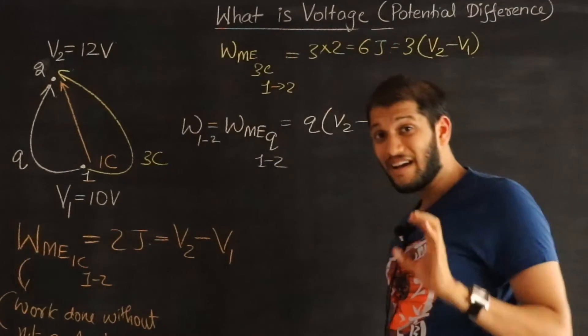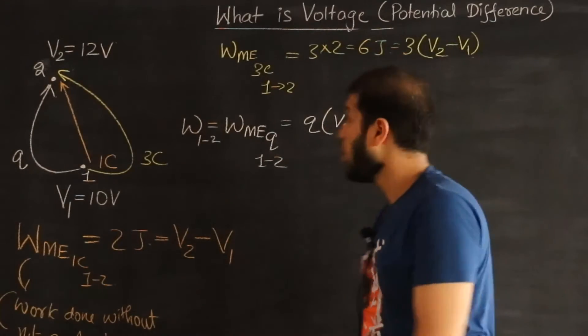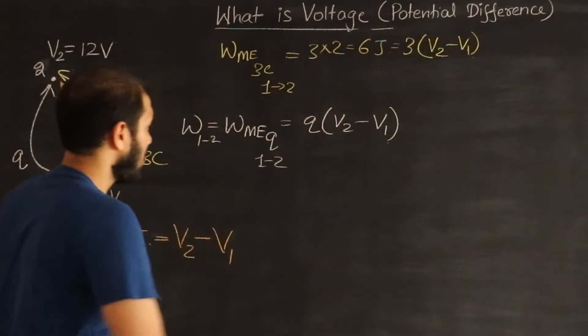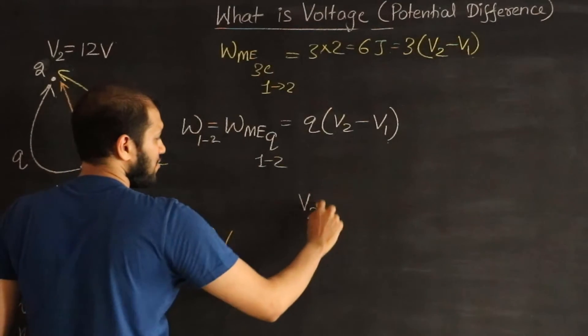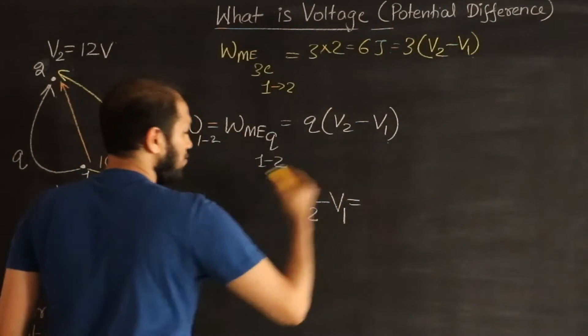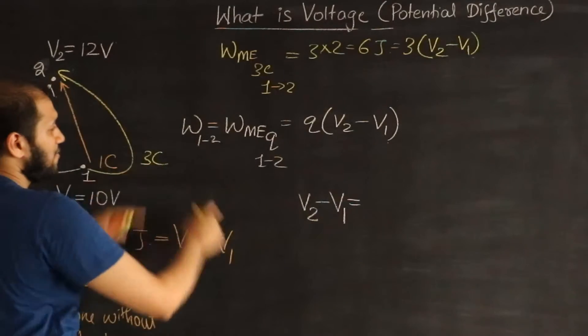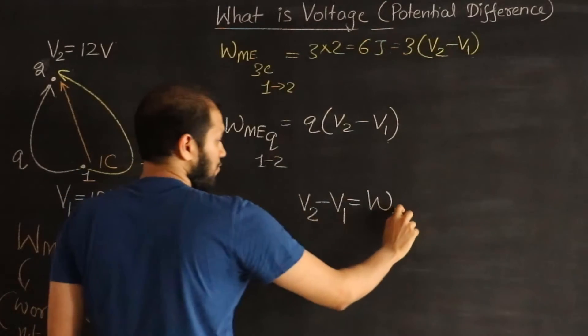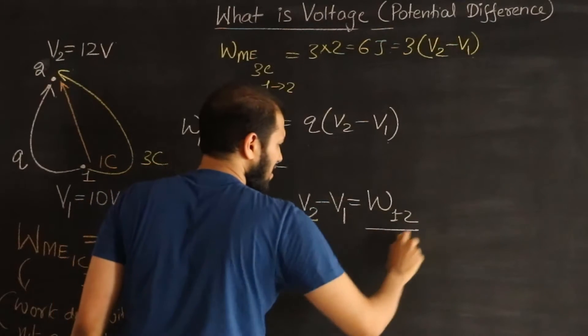And so now I can define mathematically for the first time what the potential difference is. From this example, potential difference V2 minus V1 can be defined as the work done in moving a charge Q from 1 to 2 divided by the charge.